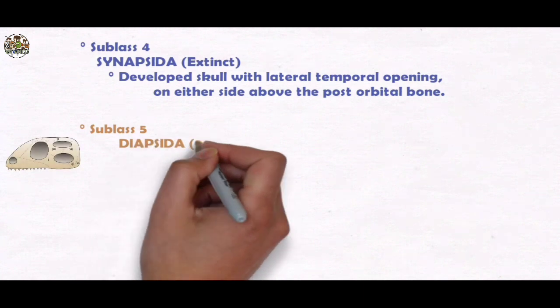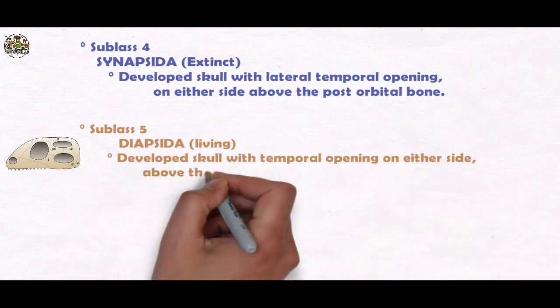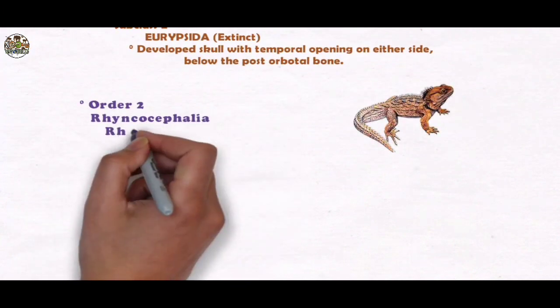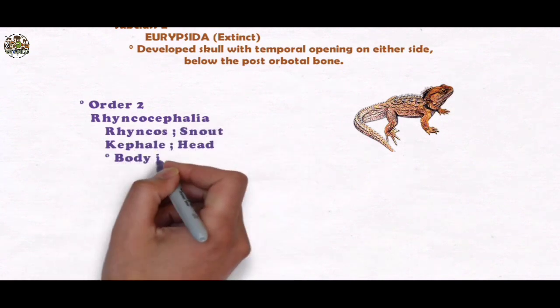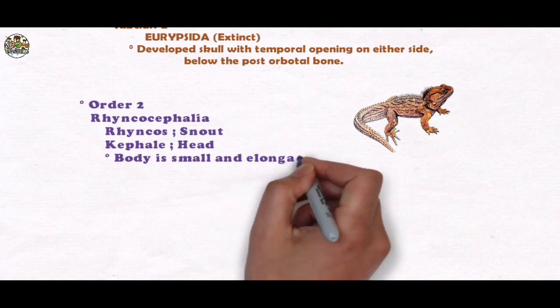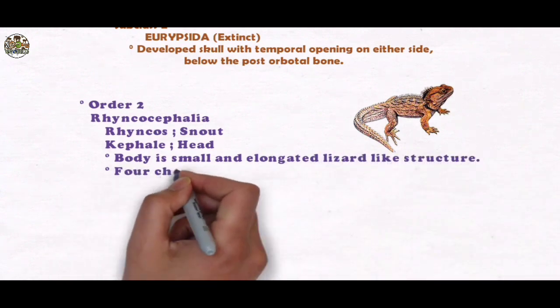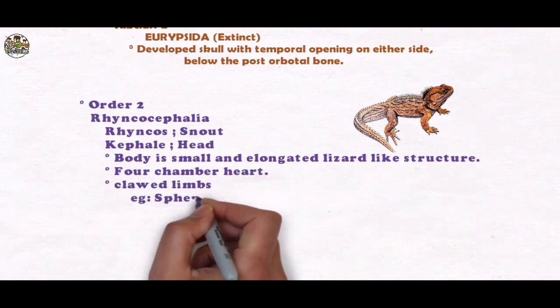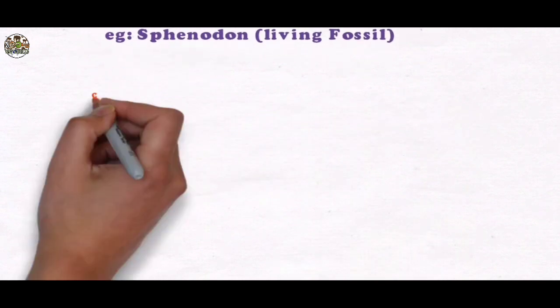Subclass 5: Diapsida - developed skull with temporal opening on either side separated by postorbital. Order 2: Rhynchocephalia, comes from Latin words Rhynchos, which means snout, and Kephale, which means head. Body is small and elongated. They have lizard-like structure, four-chamber heart, clawed limbs. For example, Sphenodon, which is known as living fossils.